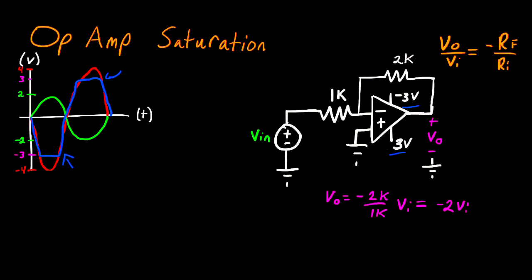The values that the op-amp is connected to, the rail voltages, this positive and negative 3 over here, don't have to be the same value. You could connect this to negative 5 and positive 6. That's something that can vary from problem to problem.